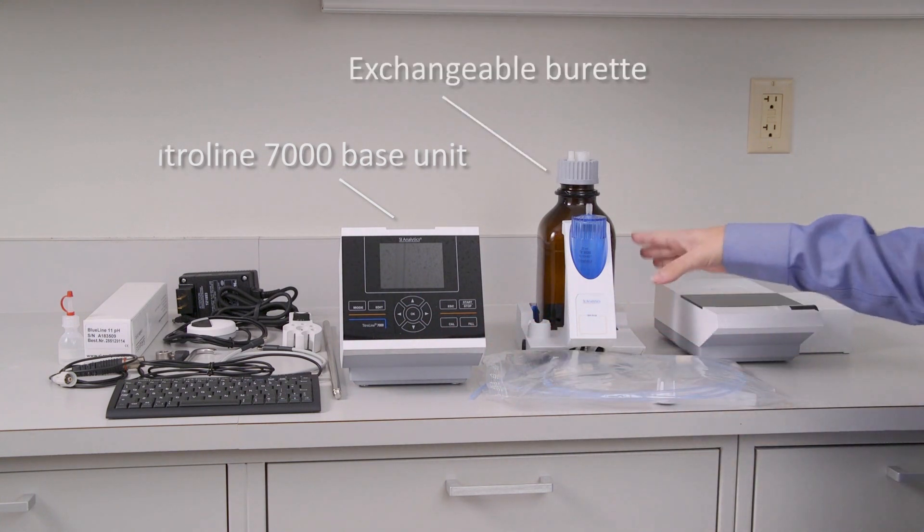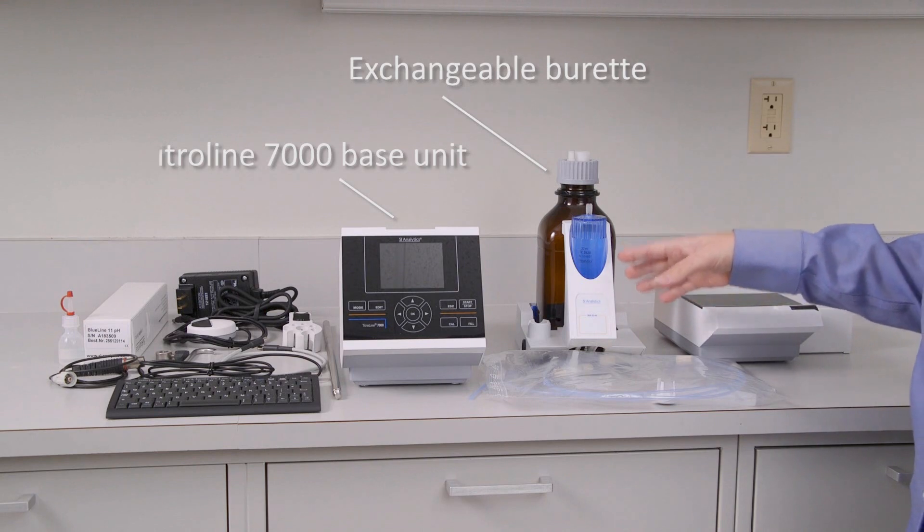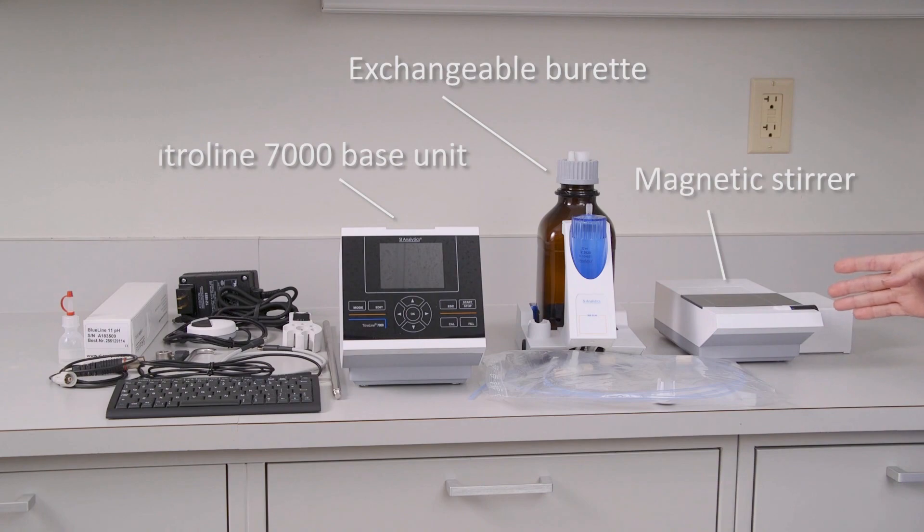The next part is the exchangeable burette. So this is the slide on, slide off, modular burette option that we offer, and all the tubing comes along with that. The final portion is the magnetic stirrer.